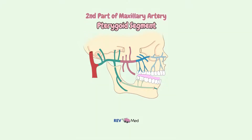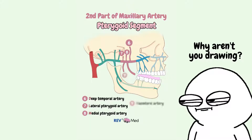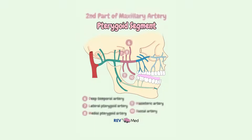Part two is the pterygoid part, which also has five branches: the deep temporal artery supplying the temporalis muscle, the pterygoid artery for the lateral and medial pterygoids, the masseteric artery for the masseter, and the buccal artery for the buccinator.